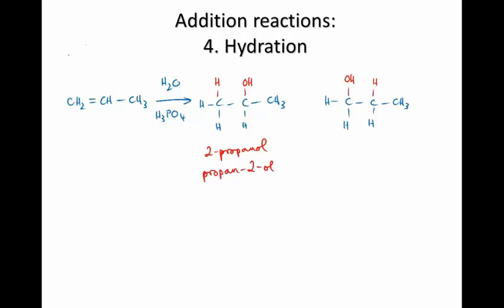This one here is called 1-propanol or propan-1-ol. All right, again, if we take 2-butene and perform the same reaction, you find, as you did with the hydrogen halides, that you get only one product.